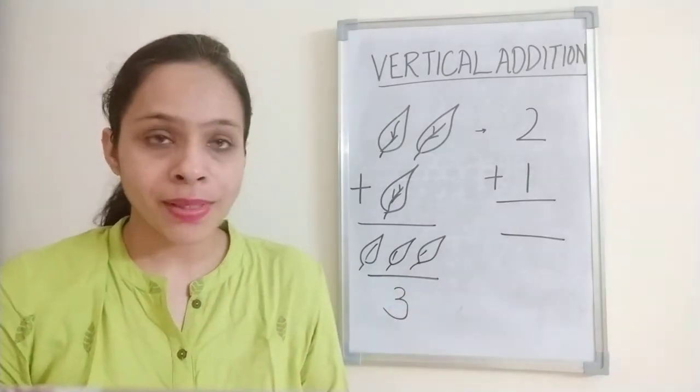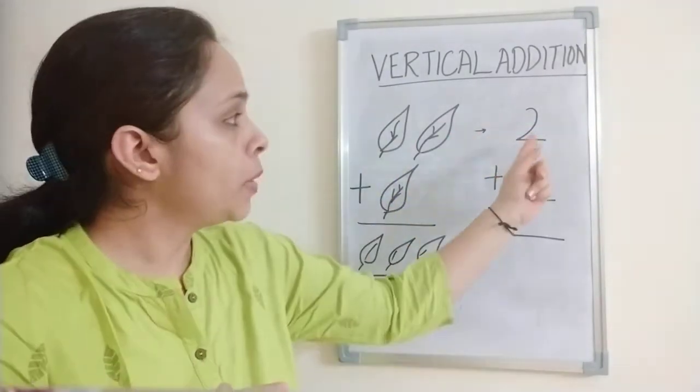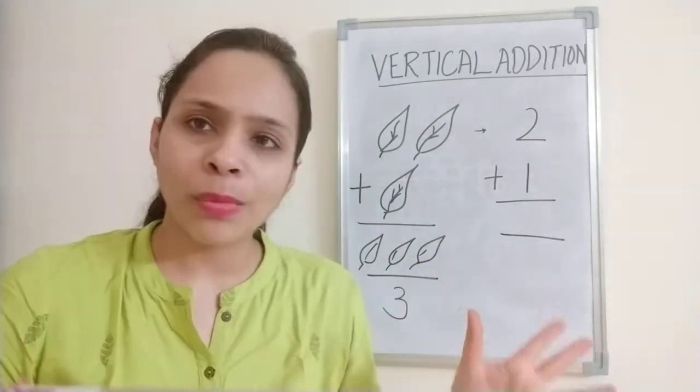How many fingers do we have? We have ten fingers. So first of all, you have written the number above. Keep that in your mind, number two. And the lower number, only number one.